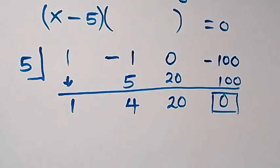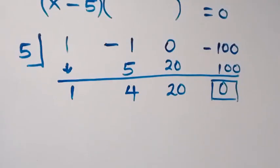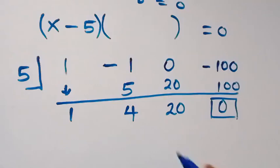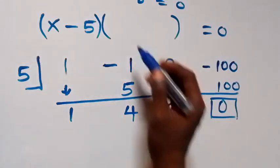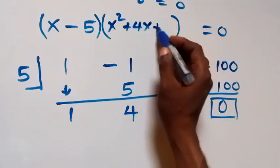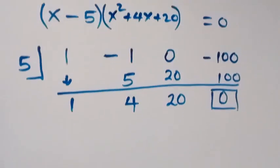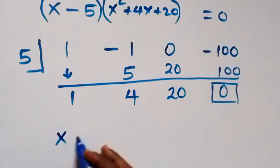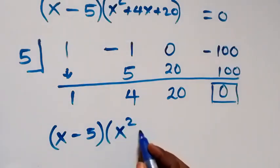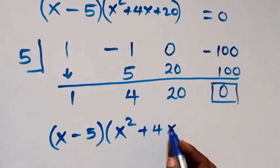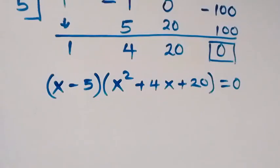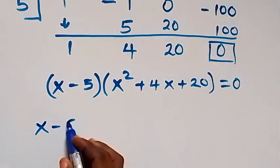The quadratic factor that is left has coefficients 1, 4, and 20, so we have x squared plus 4x plus 20 as the other factor. It implies that the polynomial becomes (x minus 5) multiplied by (x squared plus 4x plus 20) equals 0.